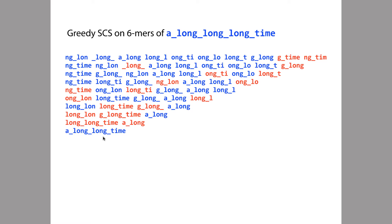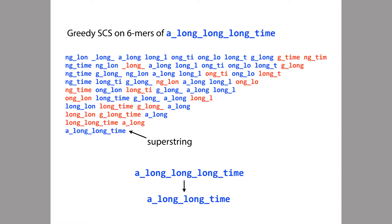It's actually shorter than the original genome. The original genome had three copies of the word 'long', and this final super string obtained with the greedy algorithm had only two. One of the copies disappeared. So why did that happen?